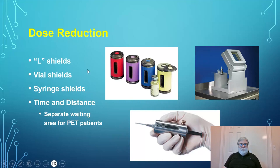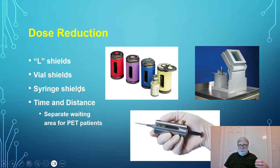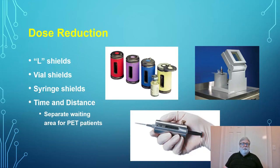Additional dose reduction strategies include having a separate waiting room for nuclear medicine patients, since after administration the radiotracer must be taken up by target organs before imaging. This is especially important for PET patients because the radiation is highly penetrating. This keeps radioactive patients away from workers and the public during the uptake period, reducing worker and public dose.